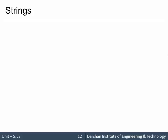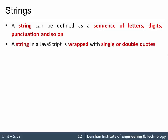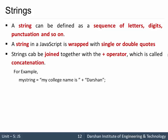Hello everyone, in today's session we are going to discuss strings and their functions inside JavaScript. A string can be defined as a sequence of letters, digits, punctuation, and so on. A string in JavaScript is wrapped with single or double quotes. Strings can be joined together with the plus operator, which is called concatenation. For example, there is one string 'my string' and I want to concatenate it with another string 'my college name is' and then 'Darshan'.